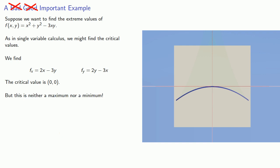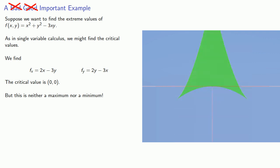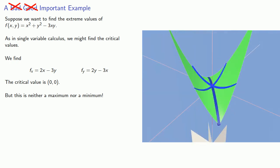And so our critical value is neither a maximum nor a minimum, because looked at from some directions it's a maximum value, but looked at from others it's a minimum. We still want a name for it, and so we say that a critical value that corresponds to neither a maximum nor a minimum is called a saddle point.